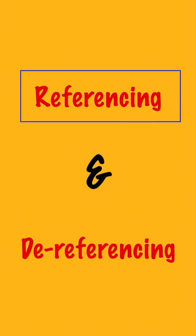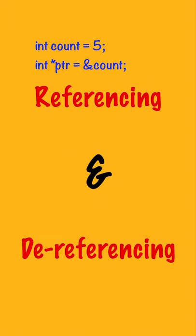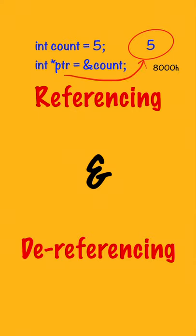Let's understand referencing in C programming. Here I have taken an integer variable count and a pointer which points to the memory location where the variable count is stored. Let's say it is stored at eight thousand — hence pointer ptr will refer to memory location eight thousand. This is called referencing.